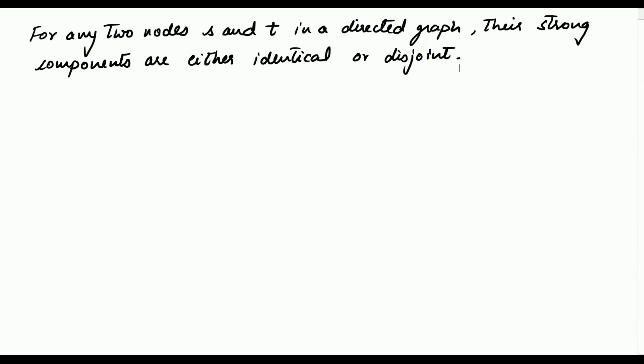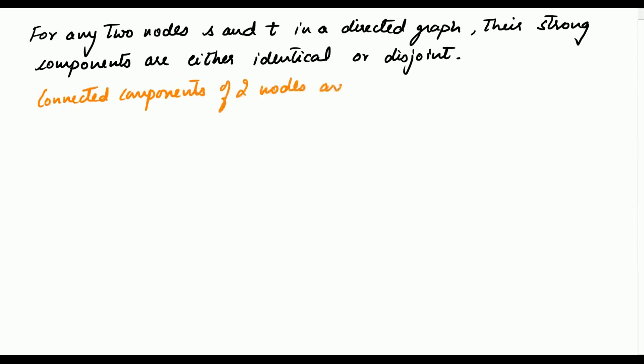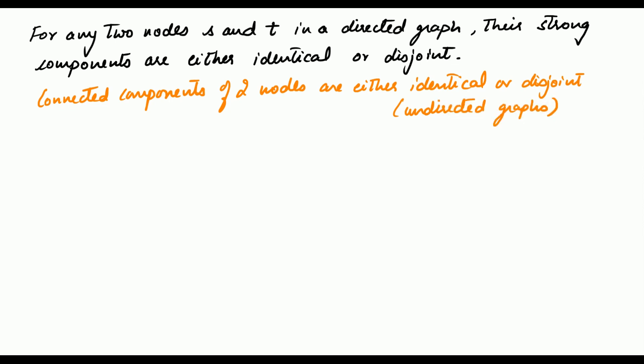A very important observation: for any two nodes S and T in a directed graph, their strong components are either identical or completely disjoint. We made a similar statement for undirected graphs — connected components of two nodes are either identical or completely disjoint. We make the same statement for directed graphs: the strong component of S and the strong component of T are either completely identical or completely disjoint.